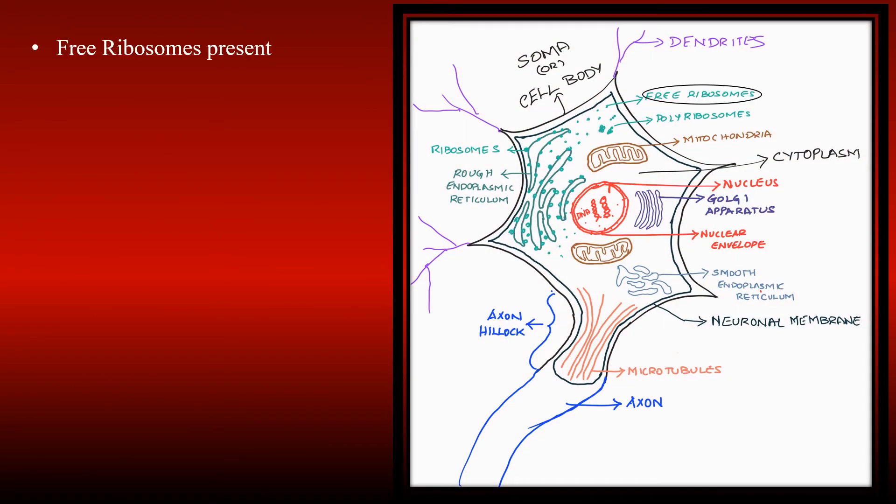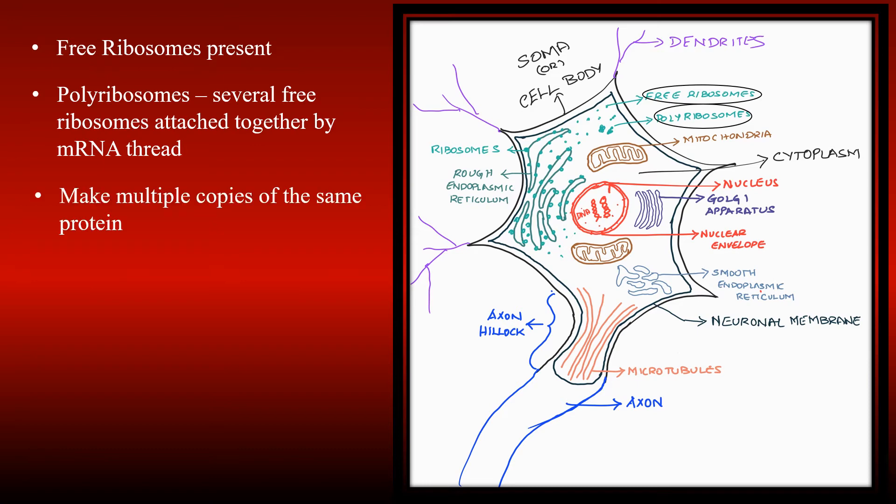In addition to the ribosomes that are attached to the rough endoplasmic reticulum, there are several free ribosomes present in the cytoplasm. When these ribosomes appear to be attached by an mRNA thread, it is called polyribosomes. These make multiple copies of the same protein.